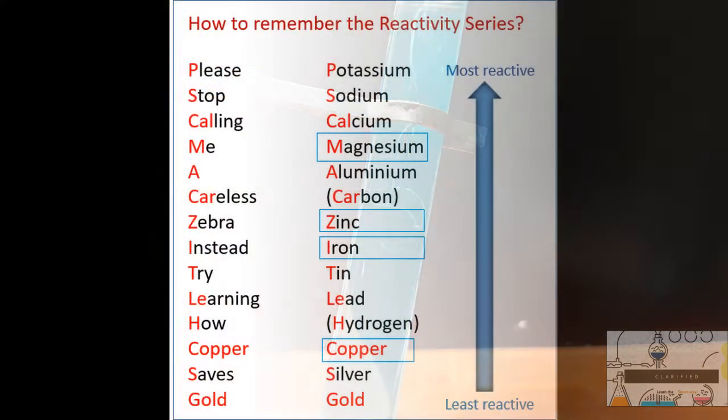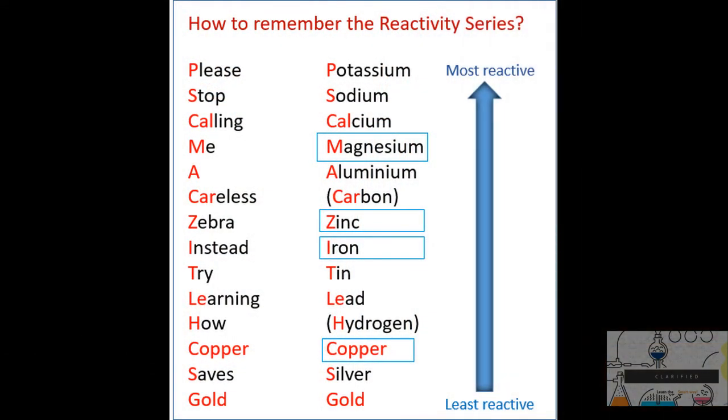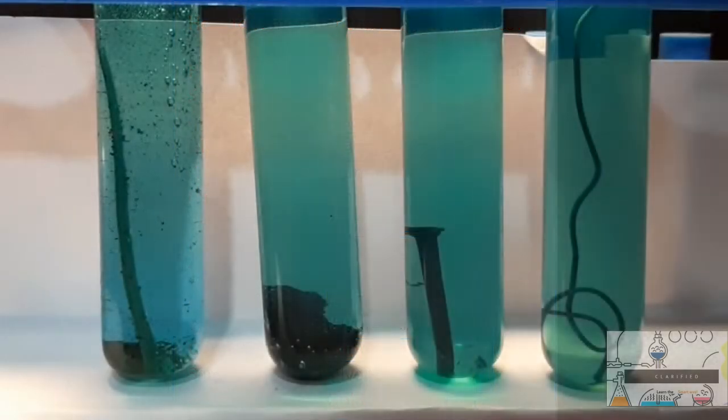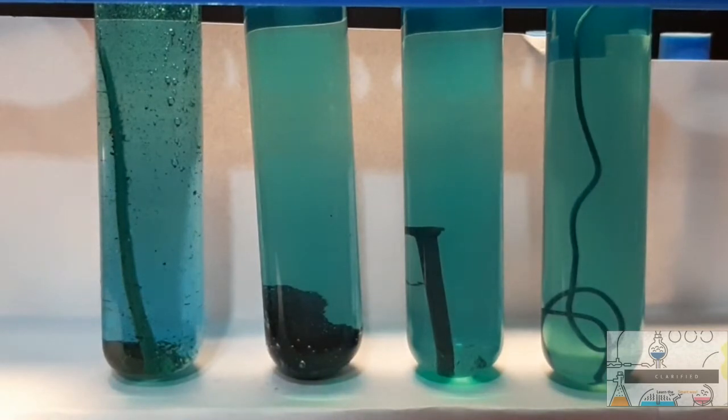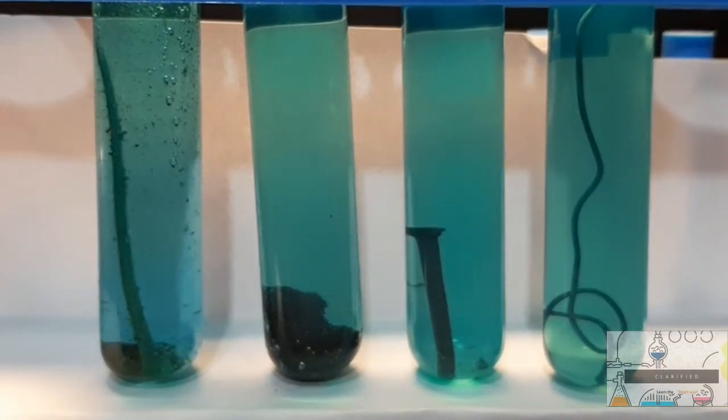The reason why they reacted at different speeds is because of the reactivity series. Magnesium is the most reactive of them, while zinc is also highly reactive but not as much as magnesium. Then comes iron, and lead comes almost at the end of the series. But did you notice where copper is? It is below all these.